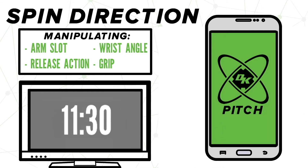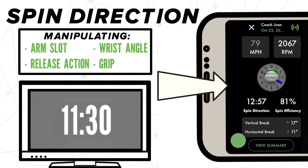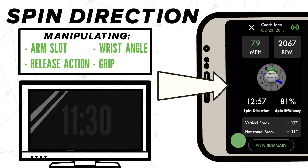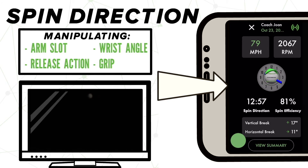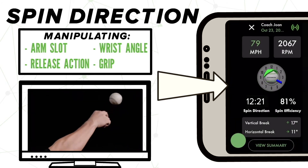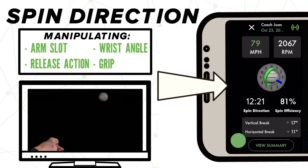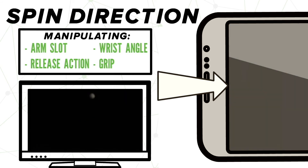So where can you find spin direction on the DK Pitch Tracker app? Right here, both graphically and numerically. You'll notice that on this particular pitch we have a spin direction of 12:57, but with a slight change in grip, such as moving your fingers closer together, you can notice a change towards a pitch with a 12:21 spin direction.